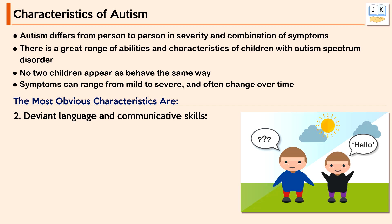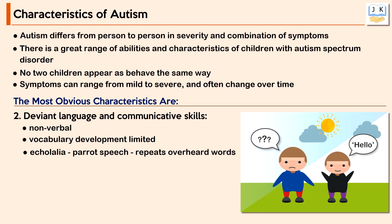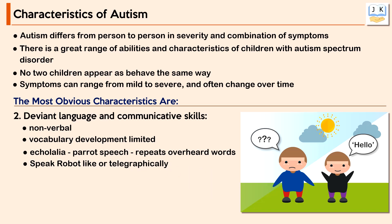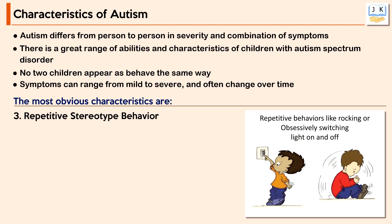Another obvious characteristic is deviant language and communicative skills. Most children with autism are non-verbal; their vocabulary development is limited and communication is disturbed. Such children exhibit a marked delay in speech and language milestones during infancy. Echolalia, also called parrot speech, is common among children with autism, where the child repeats overheard words. They may speak in a robot-like or telegraphic manner without proper grammatical usage.